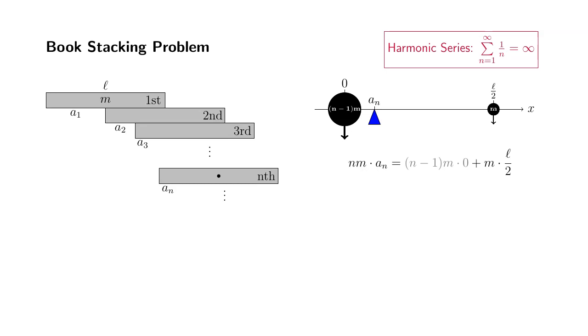So we can just divide both sides through by nm so that we can find the formula for AN. So AN comes out to be, we can cancel M and M here. So we have AN is going to be L over 2n.